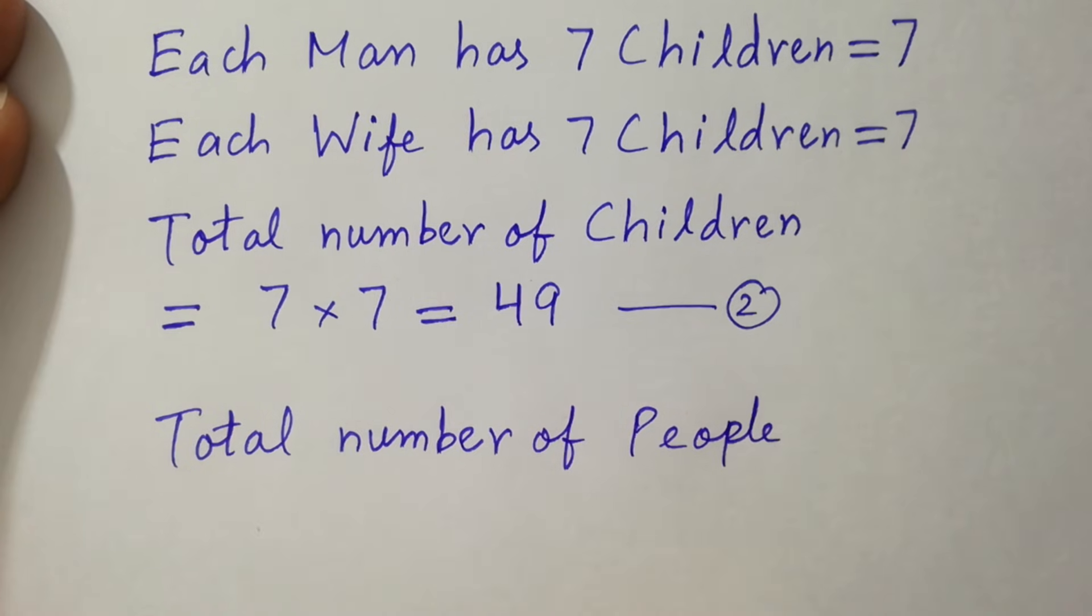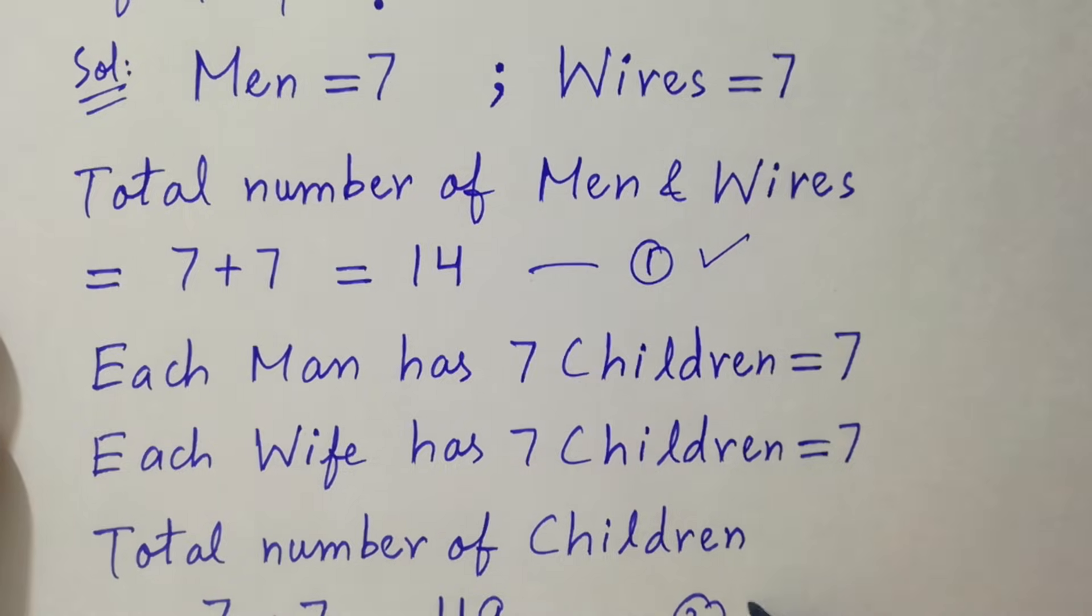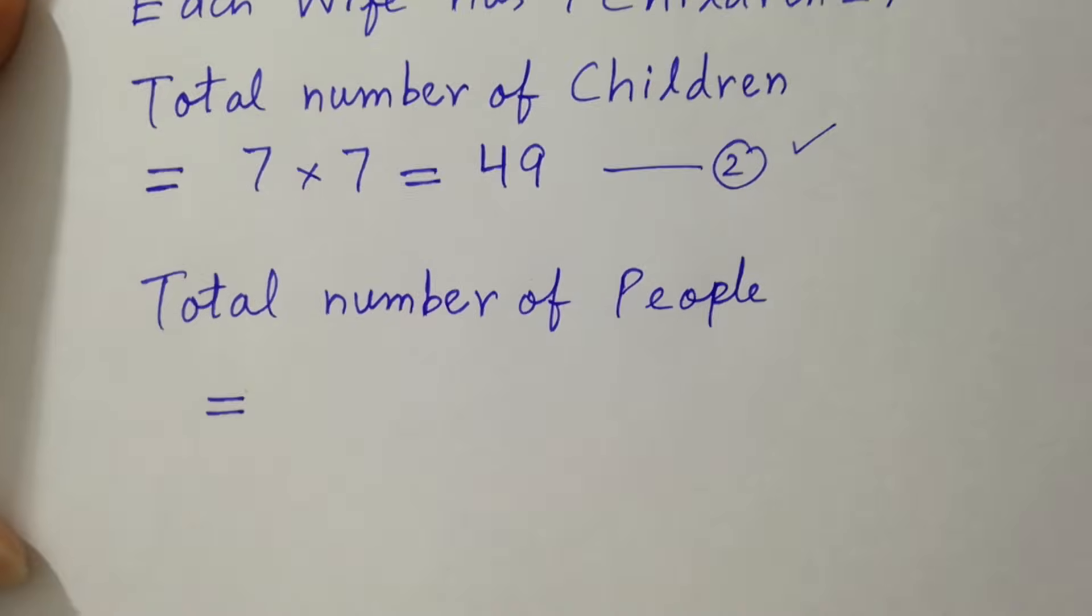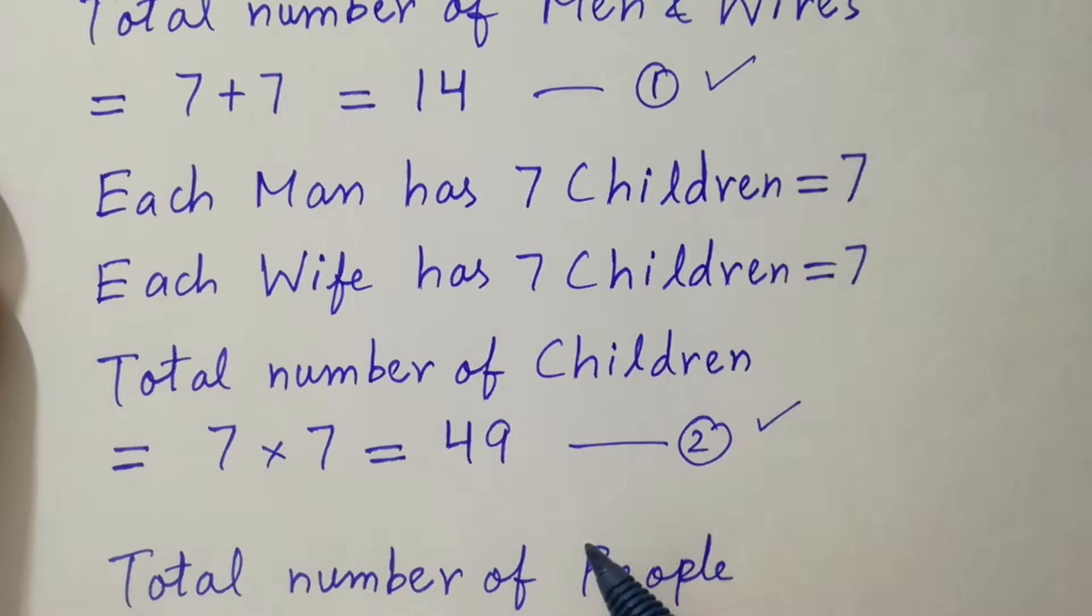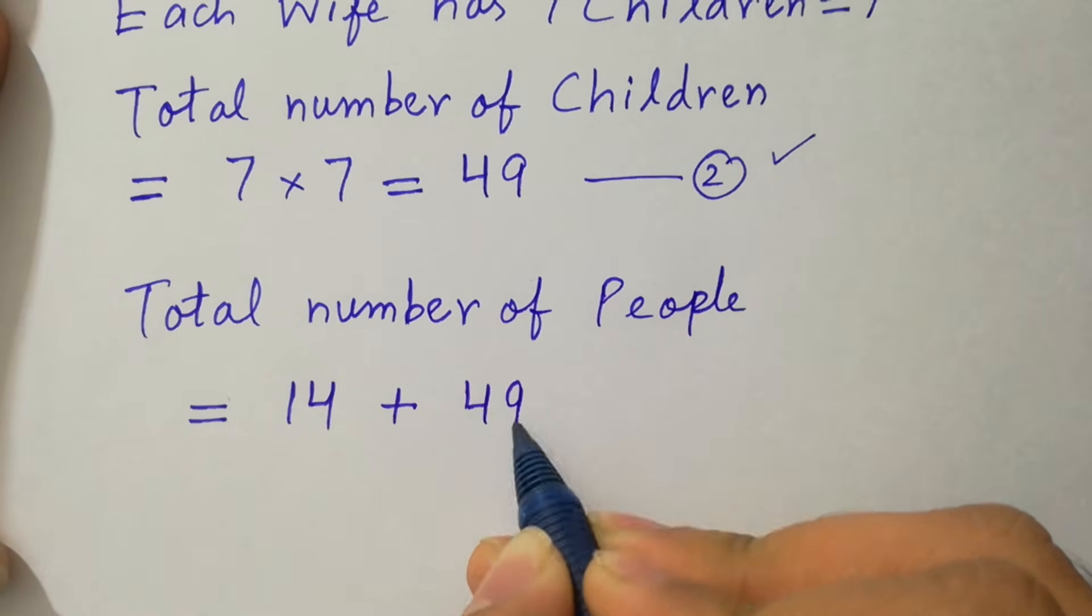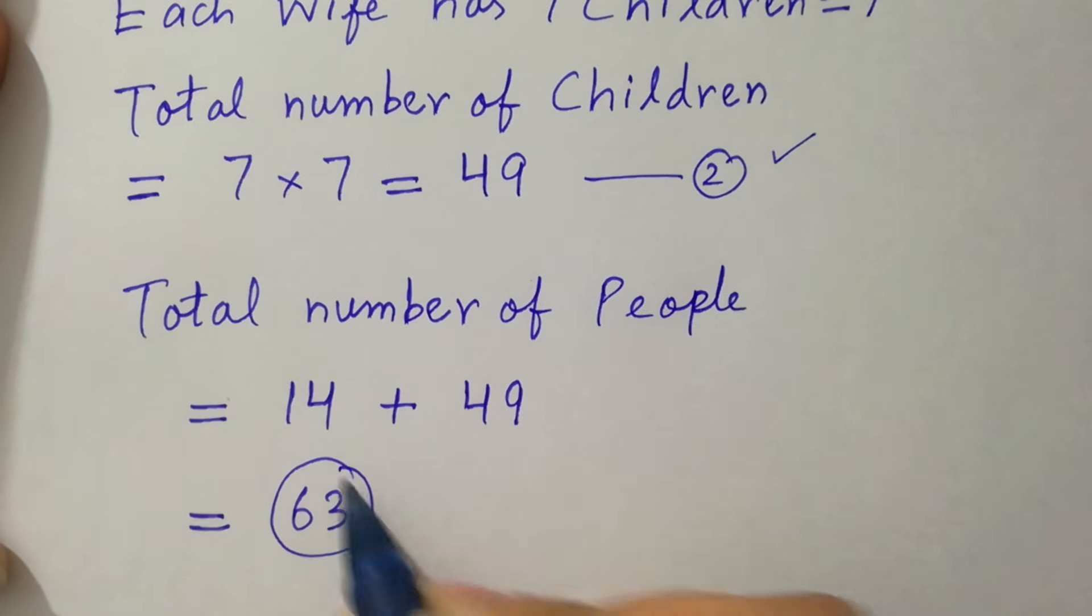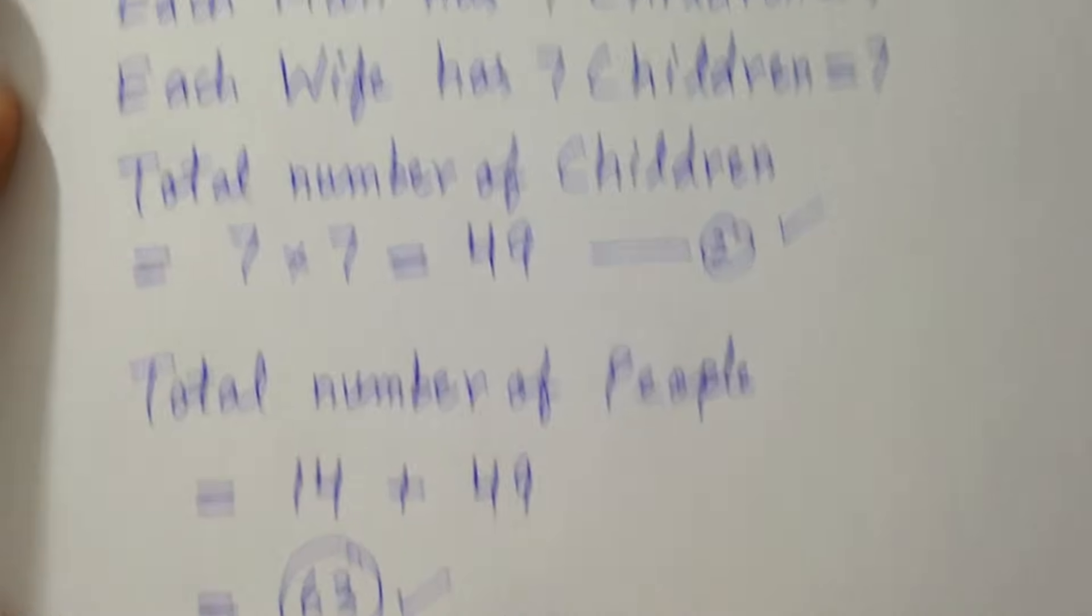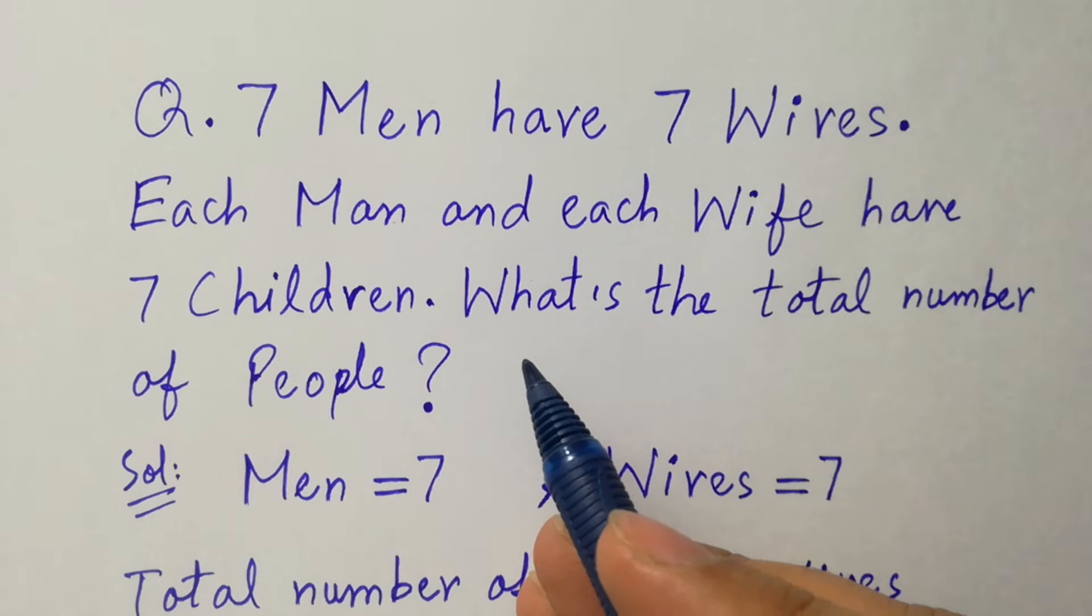We have fourteen plus second equation is forty-nine. We get sixty-three, which is our correct answer. My friends, if you think in different point of view, there are more answers of this question.